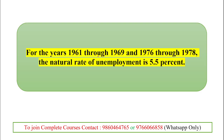This is a factual point: in years 1961 through 1969 and from 1976 to 1978, the natural rate of unemployment was 5.5%, so the Phillips curve refers to money wage stabilization at five and a half percent.